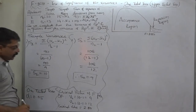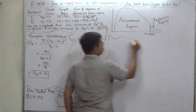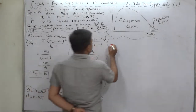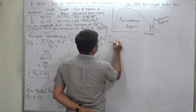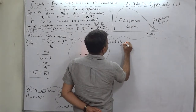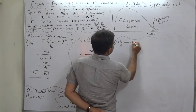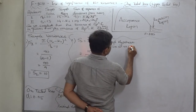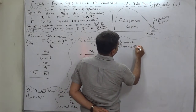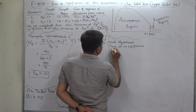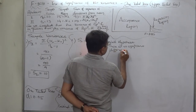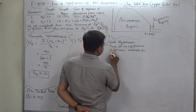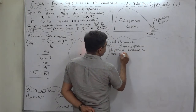Now, the null hypothesis states there is no significant difference between the two population variances.